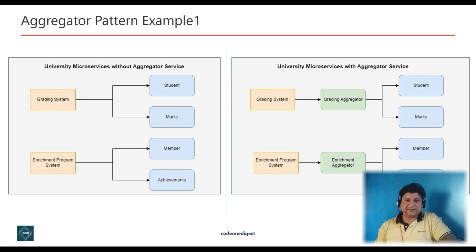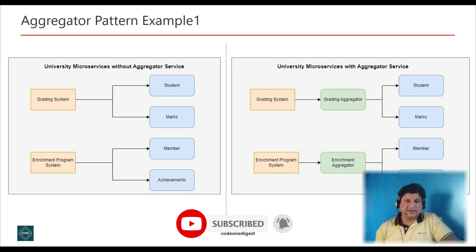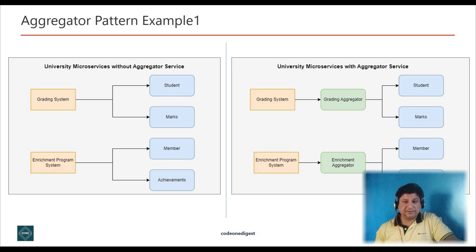Let's understand the aggregator design pattern with an example of a university microservice application. Imagine a university that has a monolithic system being converted to microservices. You deploy four services: a service to get student information, a service to get marks, a service to get membership information, and a service to get student achievements.